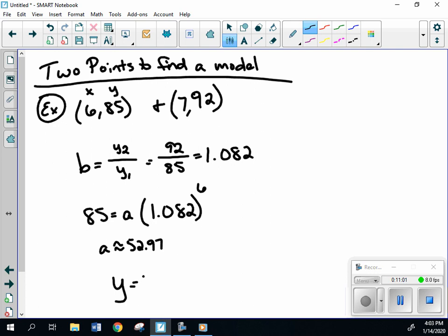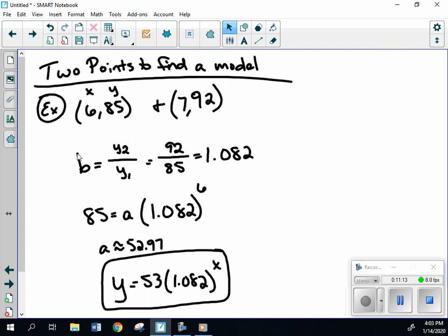So our equation is then Y equals 53 times 1.082 to the power of X. So again, just some basic algebra there. Again, this only works if you have two consecutive points in order to find that ratio. Otherwise, you're going to have to use a regression model on Desmos.